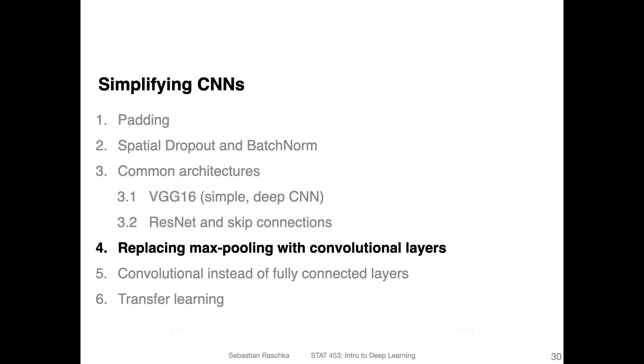Yes, so in the previous videos we talked about the VGG-16 architecture and the residual network. Now I want to talk about a topic that is somewhat related to convolutional neural network architectures. It's not super important in terms of implementing better performing convolution networks, but I think it really helps solidify the understanding of how convolutions work.